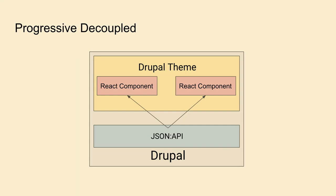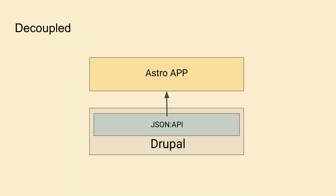Progressive decoupled is when you have your React component embedded within your Drupal theme. You have Drupal, then you have JSON API providing content to the React component, or you can also pass variables through blocks to the React component embedded in your template. Decoupled is when you have a separate application — could be Astro, React, or Next.js — and another application, Drupal, as the content management system, with JSON API providing content to the application.